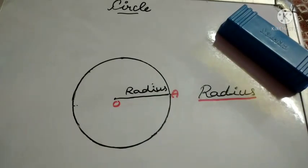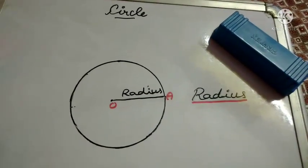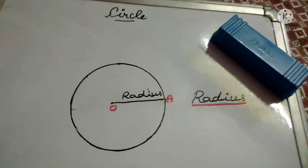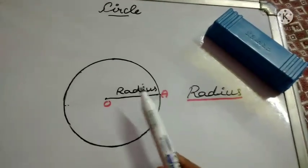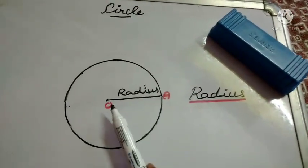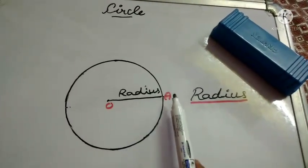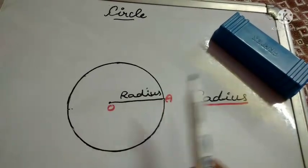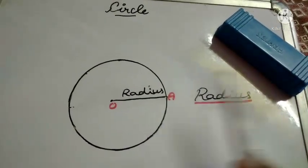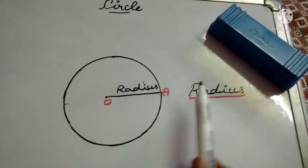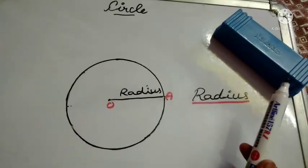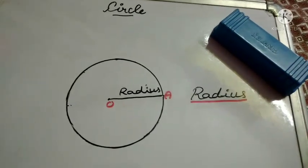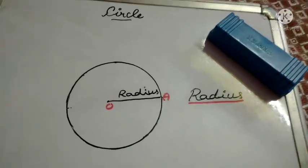Now we are going to learn what is radius. The fixed distance from the center point is known as radius. Here, OA is the radius.